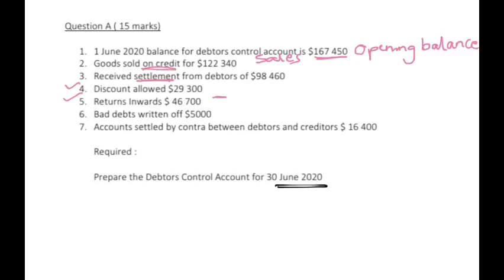Accounts settled by contra between debtors and creditors: $16,400. For example, Emma owes me $500, and I owe Emma $200. Instead of paying $500, Emma can deduct the $200 I owe her, so she only pays me $300. That's what we do in cases of accounts settled by contra — we cancel what each party owes the other, netting off the balance.